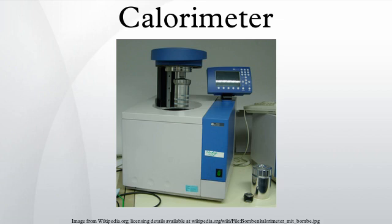A calorimeter is an object used for calorimetry, or the process of measuring the heat of chemical reactions or physical changes as well as heat capacity. Differential scanning calorimeters, isothermal microcalorimeters, titration calorimeters and accelerated rate calorimeters are among the most common types.